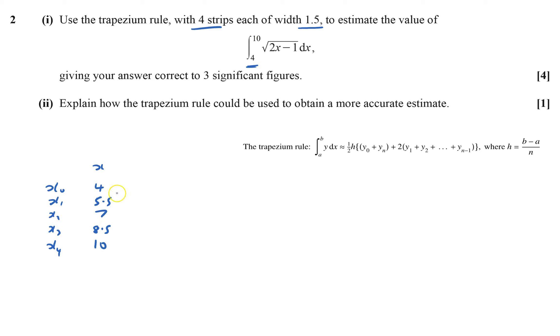Just check it gets to 10, yep, and that's four strips. And the y value, well I know the y value equals root of 2x minus 1, so 2 times 4 is 8, minus 1 is 7, so that'll be root 7.